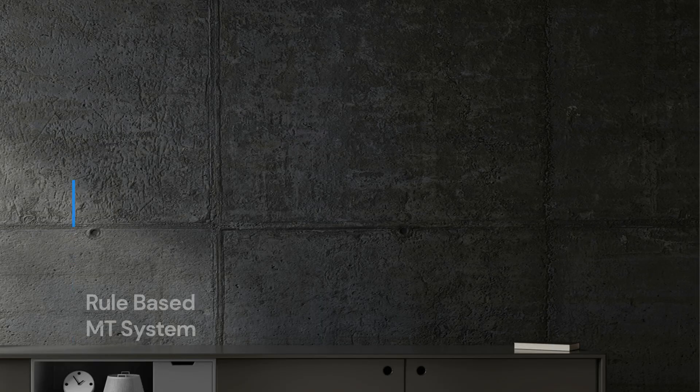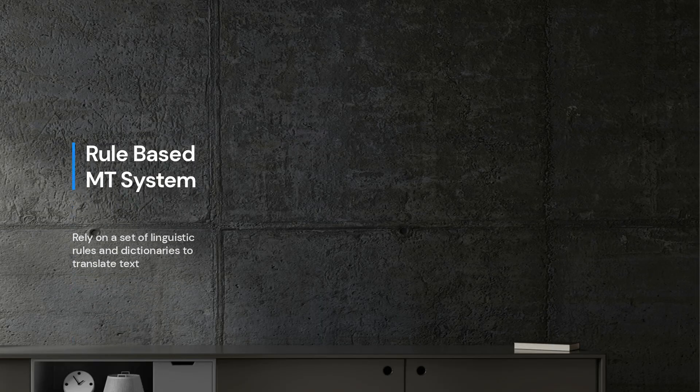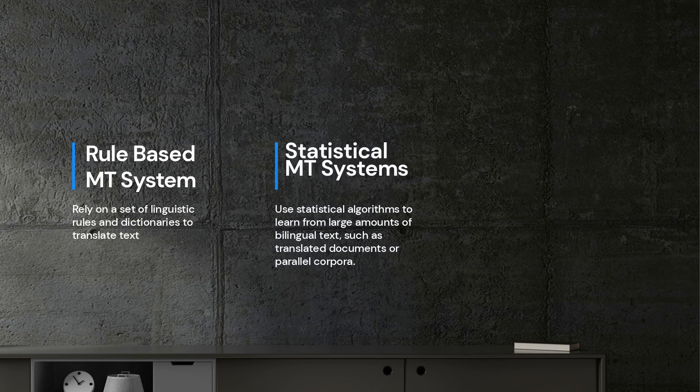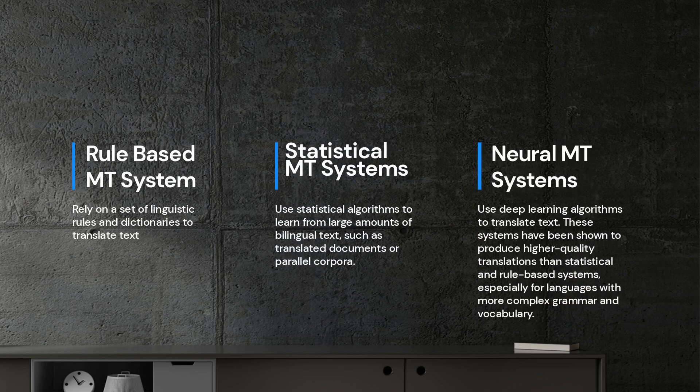First, let's define some terms. Machine translation is the process of using computer algorithms to translate text from one language to another. There are different types of MT systems, including rule-based, statistical, neural, and customized MT.